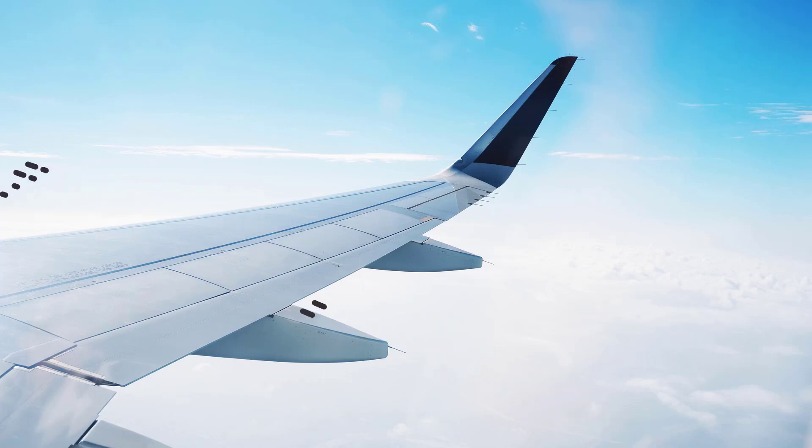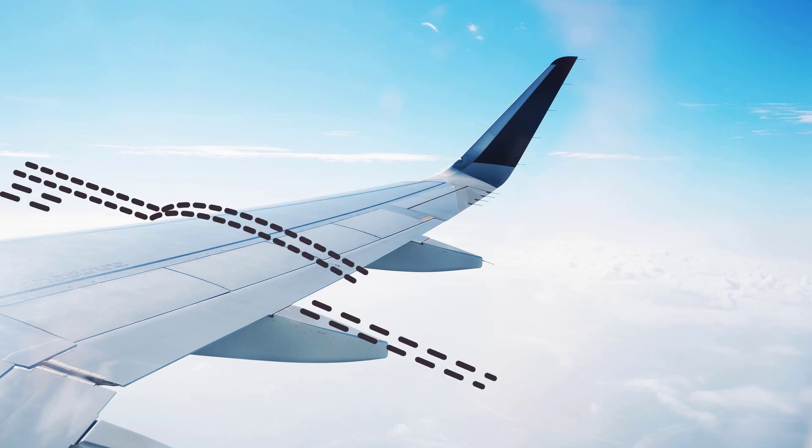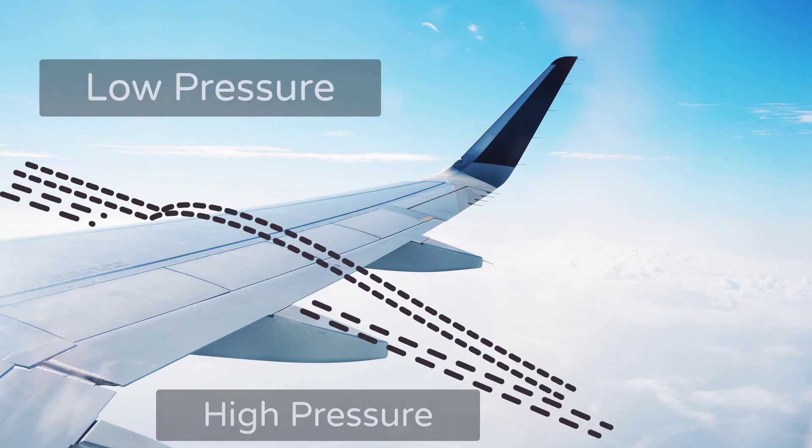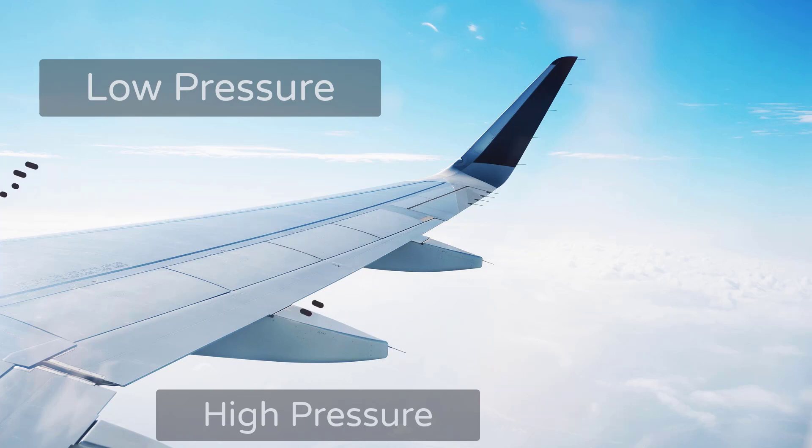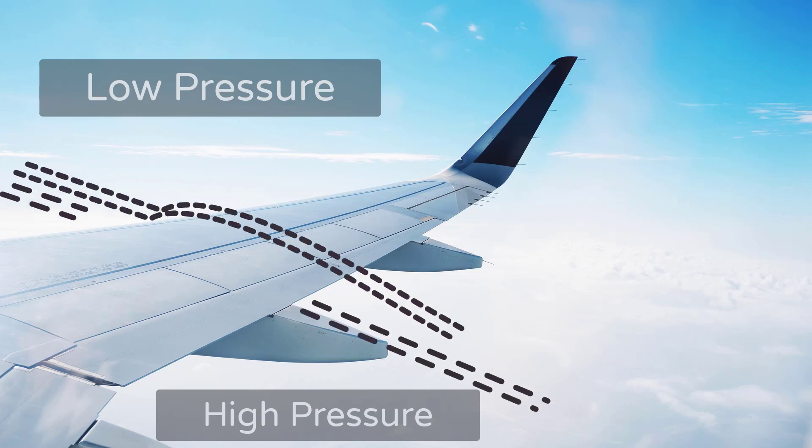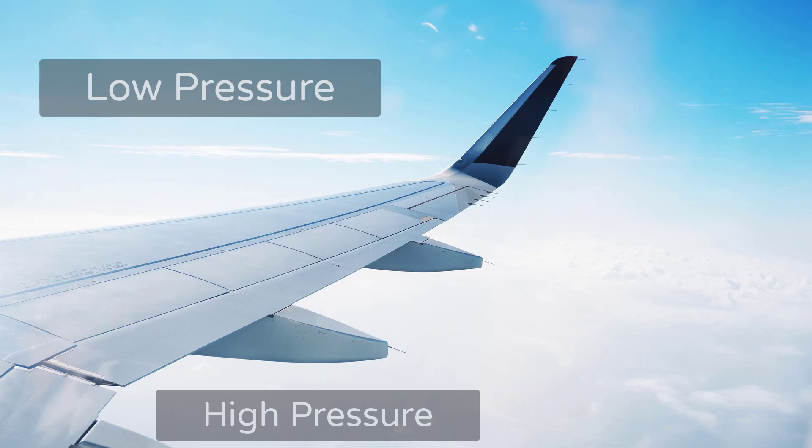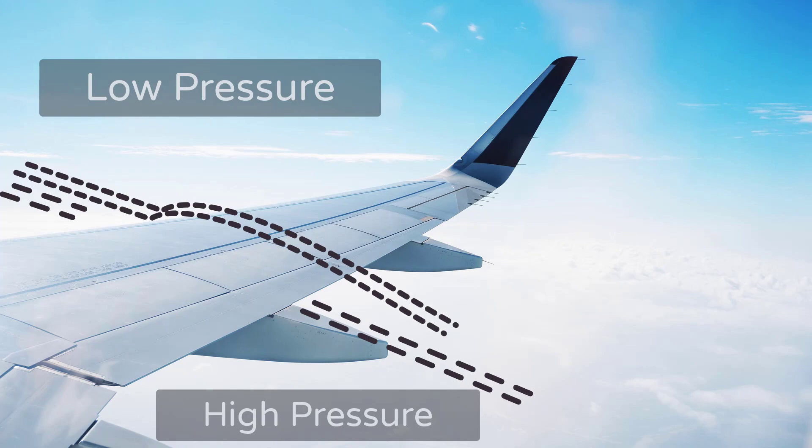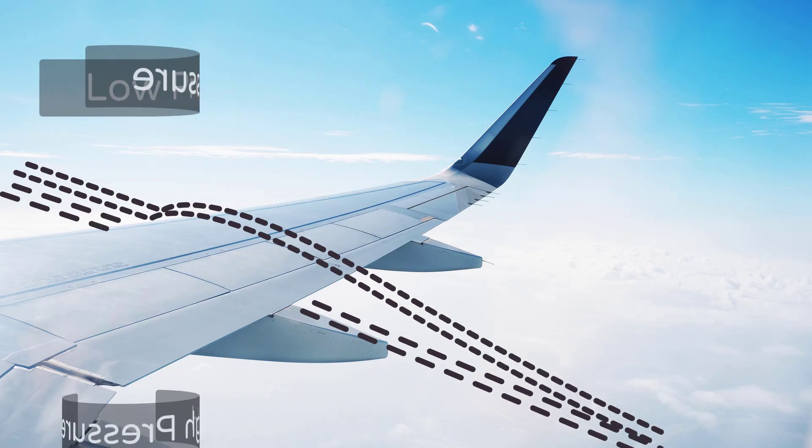This happens due to the purpose-built shape of the wings. The air passes faster over the top of the wings compared to the lower side of the wings, resulting in lower pressure above. This lower pressure area above the wings effectively sucks the aircraft upward. This suction effect is a crucial component of lift generation.